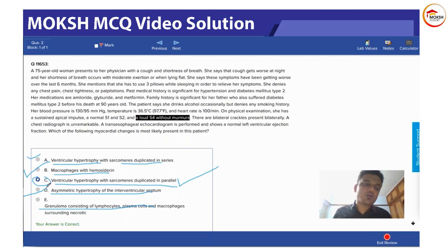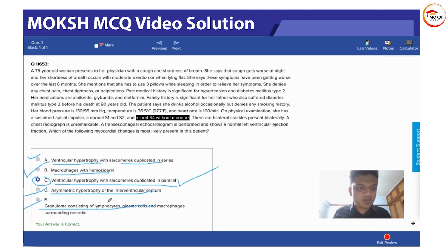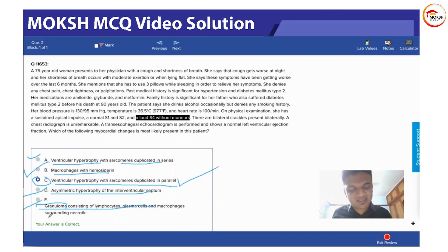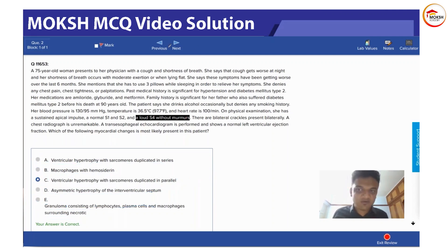Asymmetric hypertrophy with interventricular septum involvement is hypertrophic cardiomyopathy — a beta myosin heavy chain gene mutation causing irregular hypertrophy where a person suddenly collapses. The final option — a granuloma consisting of lymphocytes, plasma cells, and macrophages — is a granulomatous pathology. Granulomas are seen in conditions like sarcoidosis, tuberculosis, and syphilis, which you may be covering in pathology.